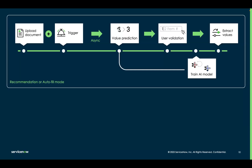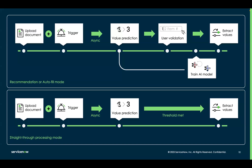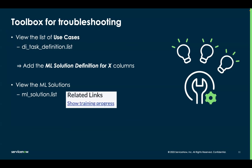Once the task is submitted after validation, training happens in the background at the same time as values are extracted and copied back into the record. When you get to straight-through processing, there is no user validation anymore, so there is no training happening. When a model is enabled for straight-through processing, you upload the document, it triggers extraction, values are predicted, and if the confidence threshold is met, values are extracted directly — no user validation, no AI training.